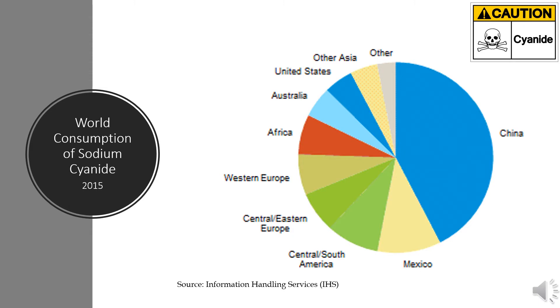China, represented in teal in this pie chart, is the world's leading gold producer and also accounts for about 40% of global sodium cyanide consumption.